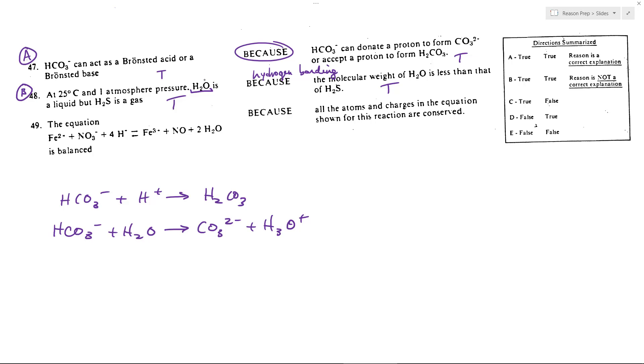49, this equation is balanced. Well, let's see. We've got Fe2, we'll do mass first. So Fe and Fe, that looks good. 1N, 1N. Okay, three oxygens, oh yeah, three oxygens, three oxygens. Okay, I was just gonna say no, but yeah, that looks good. Four H's, four H's. So that looks pretty good so far.